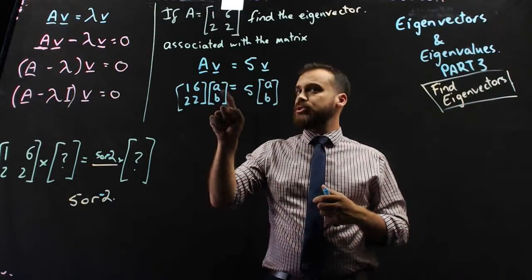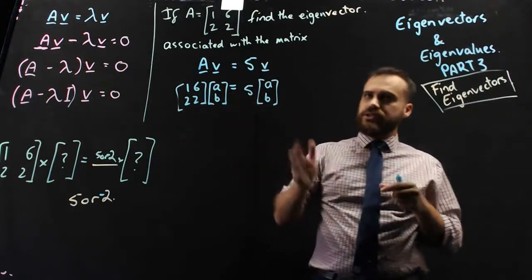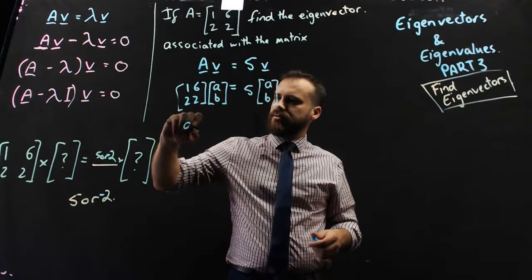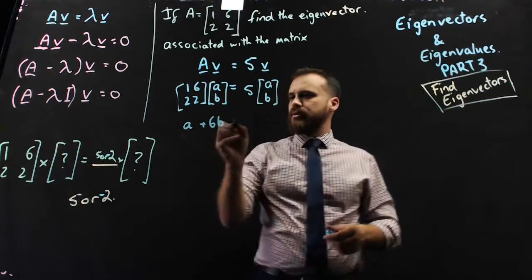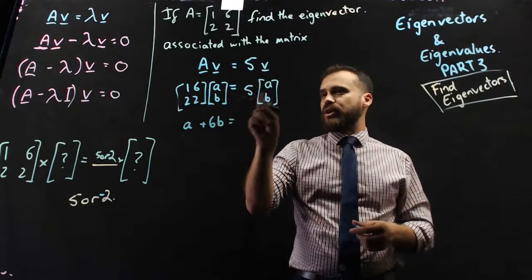Let's deal with just the first element. What would the first element be that it would give us on the left, and what is the first element it would give us on the right? So 1 times a is a, 6 times b is 6b. And the first element it will give me on the right is 5 times a.